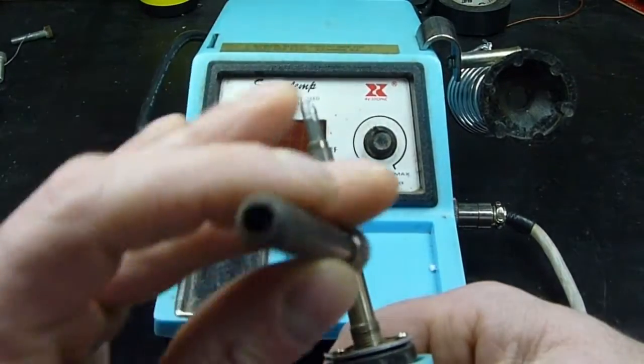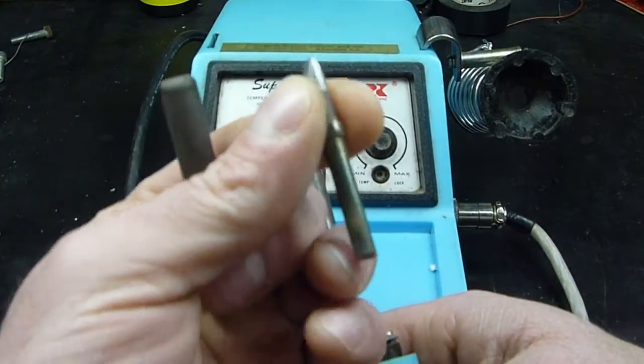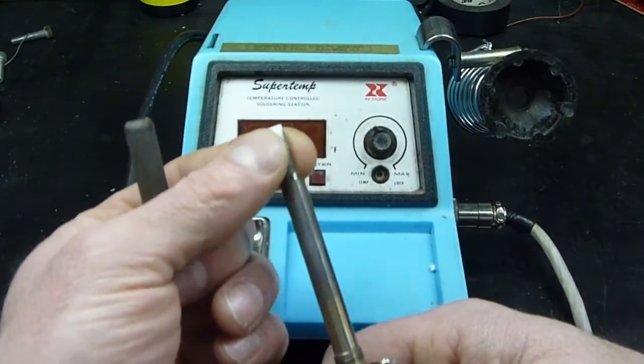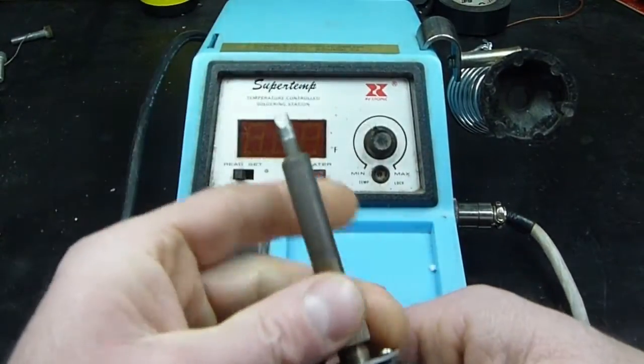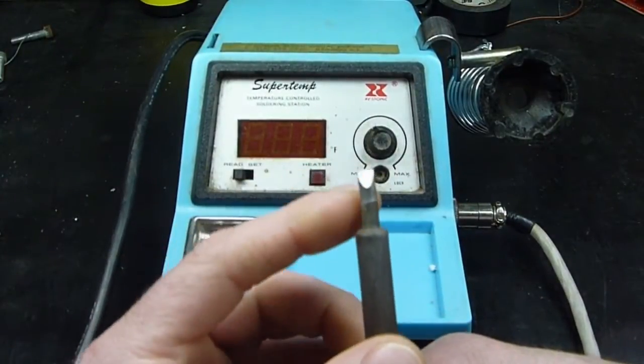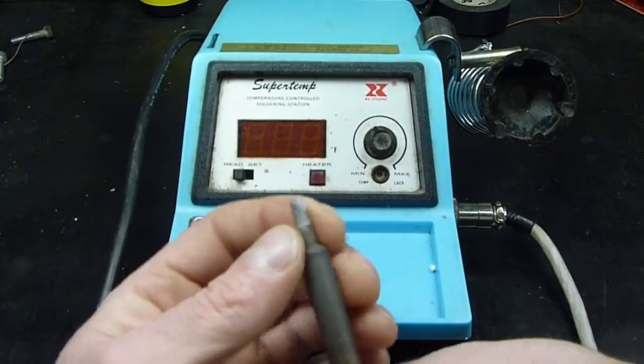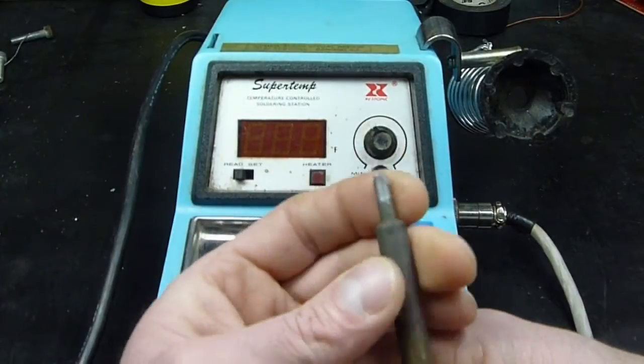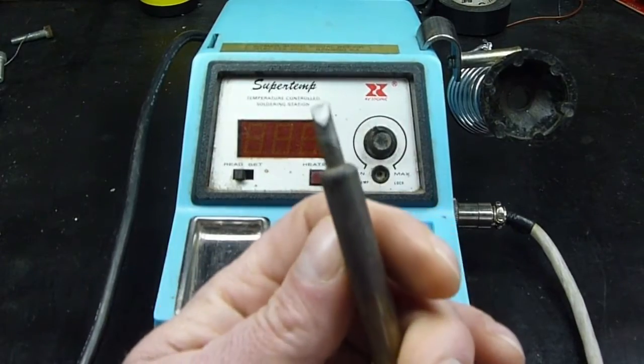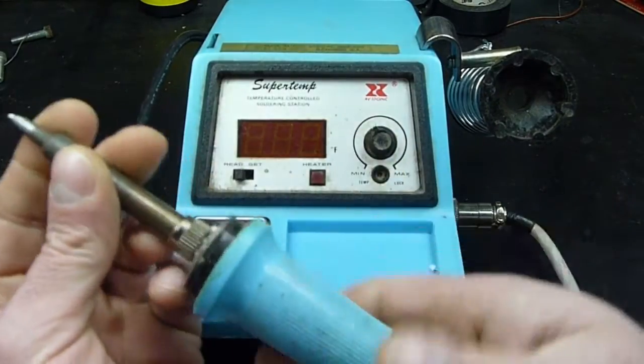The sleeve comes off and the tip comes out like that. Tips for these can be found on eBay fairly cheap. But it looked like the tip was all rusted, but I heated it up and cleaned it off with a damp towel and it came out pretty close to perfect.